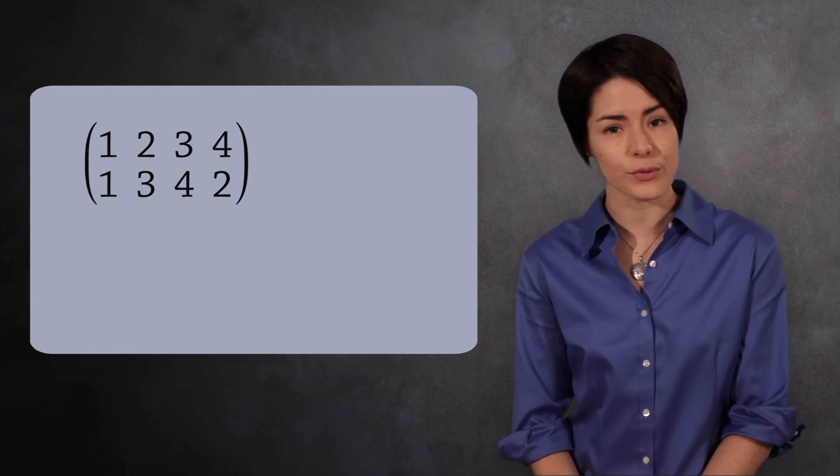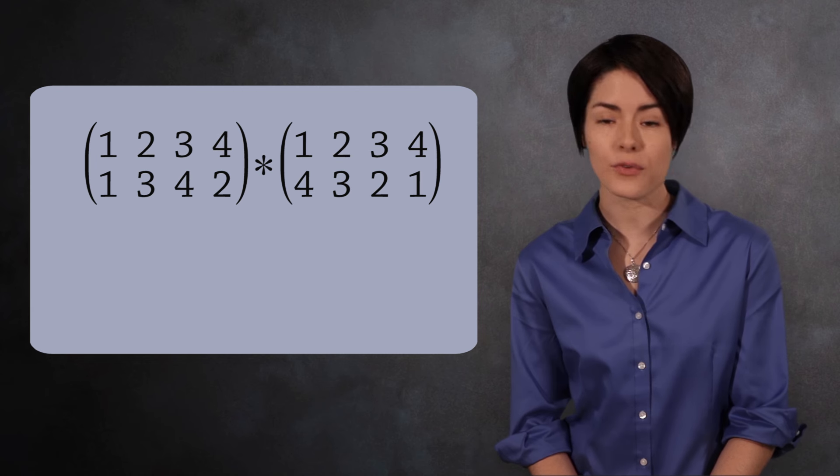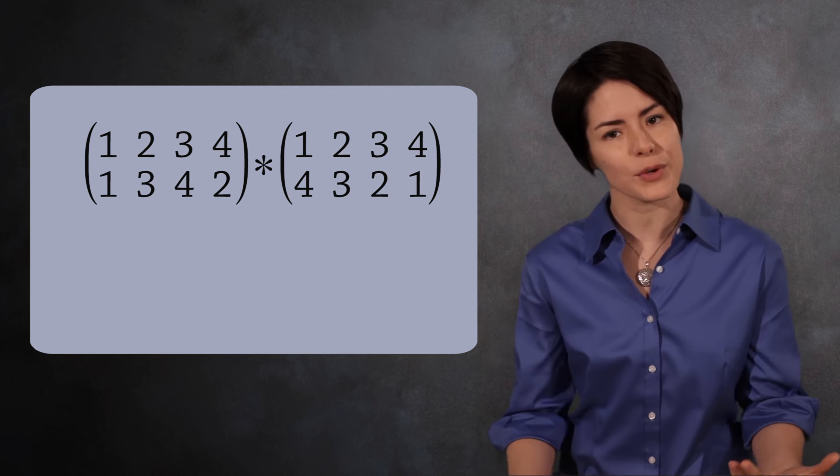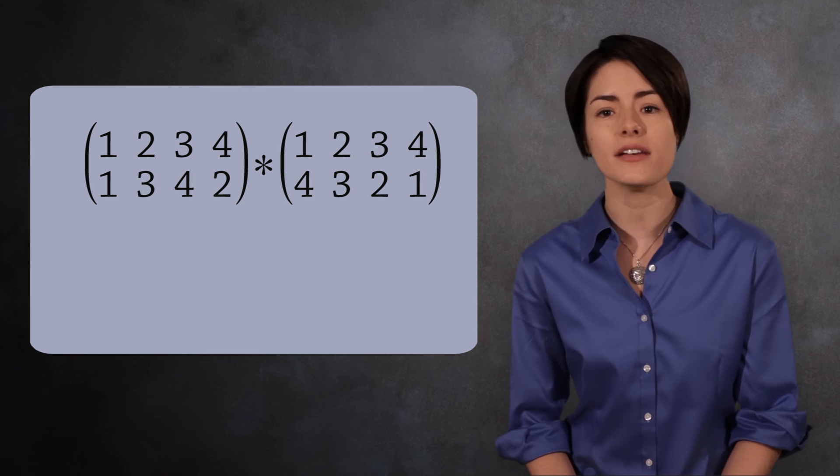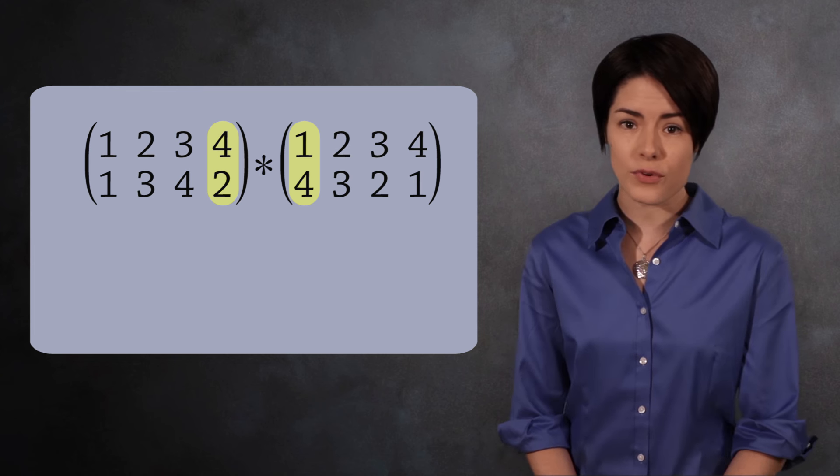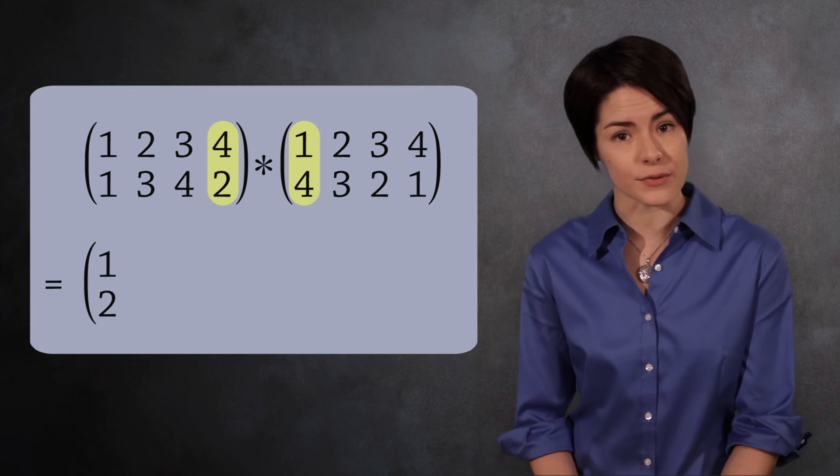Let's practice using this compact notation by multiplying the permutations 1, 3, 4, 2 and 4, 3, 2, 1. Remember, you apply the permutations from right to left, just like composing functions. On the right, 1 maps to 4, and on the left, 4 maps to 2. So the result is 1 maps to 2.